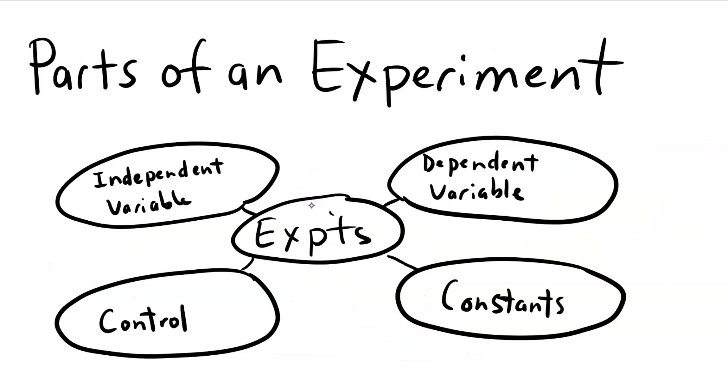So what are the essential parts of an experiment? There need to be variables that are manipulated for the purpose of the study. We call those the independent variables. Your experiment needs to include independent variables that can be manipulated. These are the variables that we are studying, and this is what the experimenter directly and purposefully manipulates.